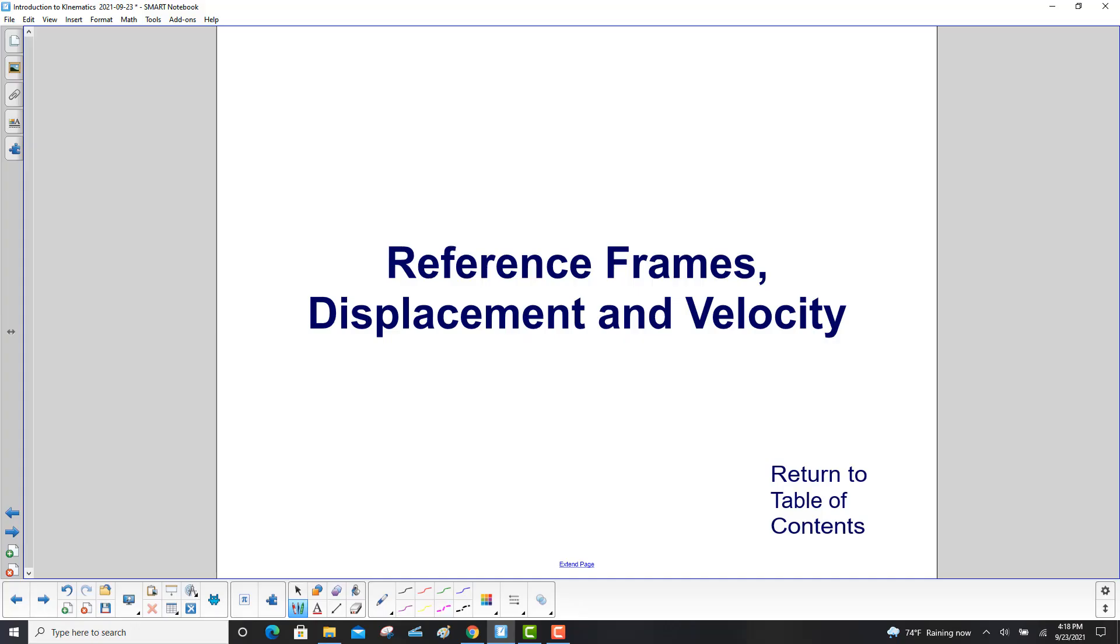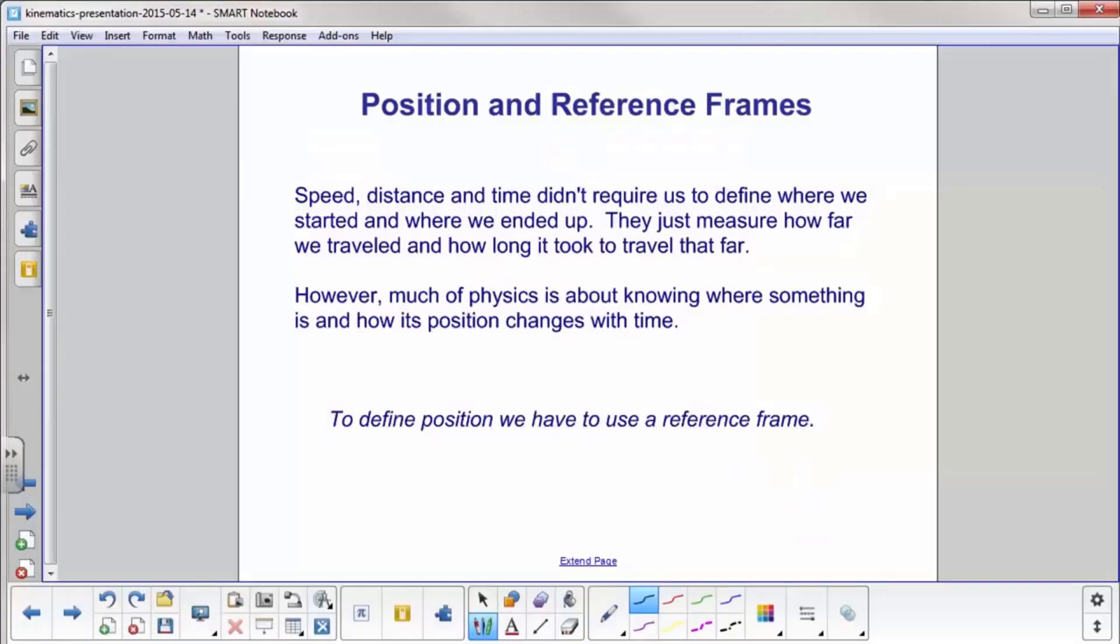Reference frames, displacement, and velocity. Speed, distance, and time, the quantities that we've already defined, didn't require us to say where we started and where we ended up. They just measured how far we traveled and how long it took to get there.